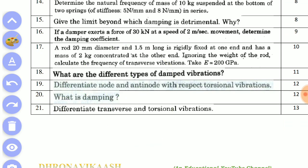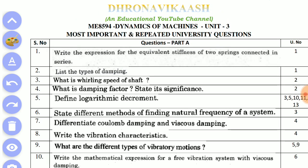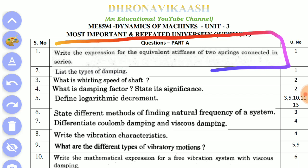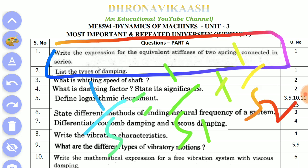The first question is: write the expression for the equivalent stiffness of two springs connected in series. The answer is: 1/S = 1/S1 + 1/S2. This is a simple answer.